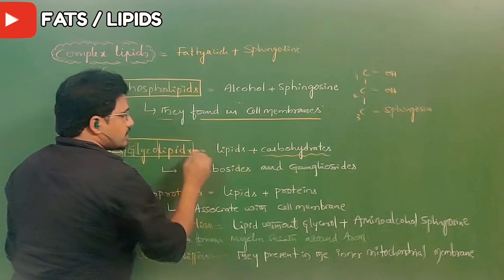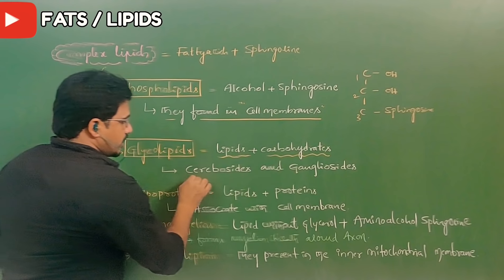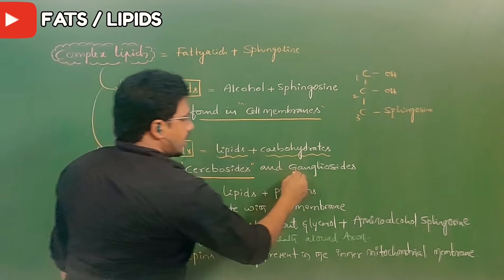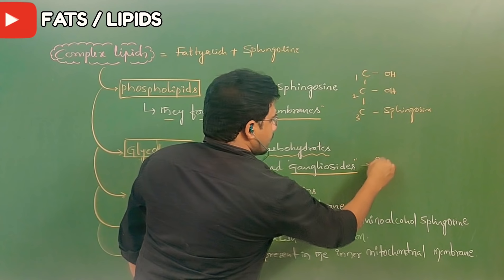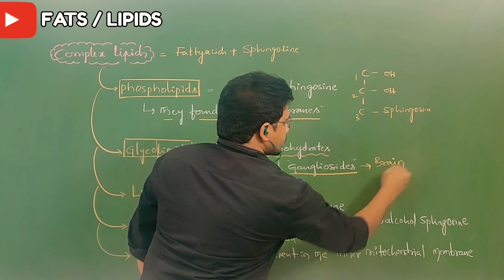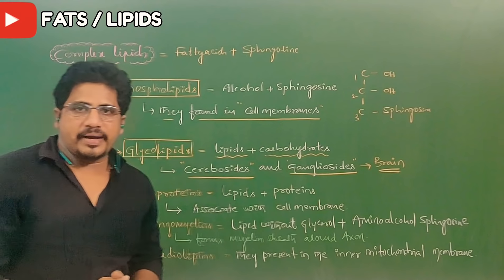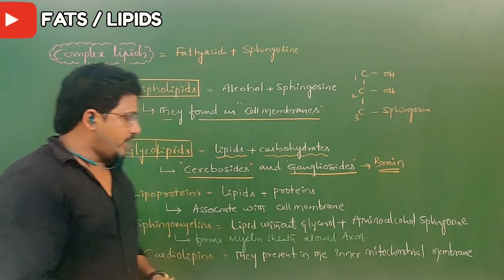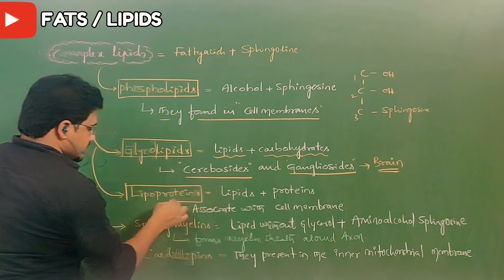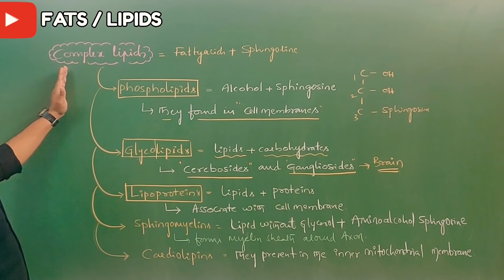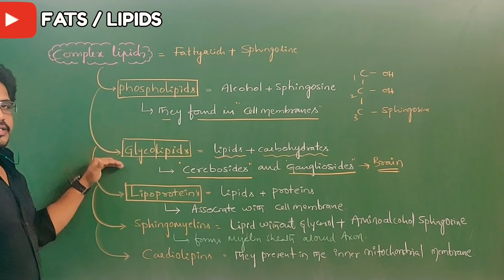The second category is glycolipids. In the name itself: glyco means carbohydrates, combined with lipids. Glycolipids are generally found in cerebrocytes and gangliocytes — both found in the brain. They help in the transport of viral particles in the brain. Third one is lipoproteins.